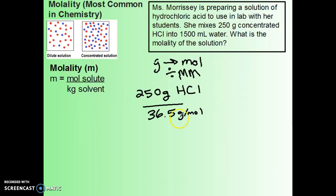Divide by a unit by itself, it cancels out, and we'll just be left with moles of HCl. So 250 divided by 36.5 gives me 6.85 mole HCl. So that's our solute that's dissolved.